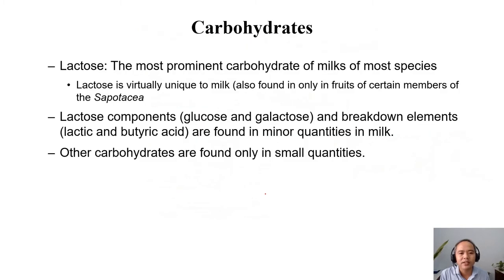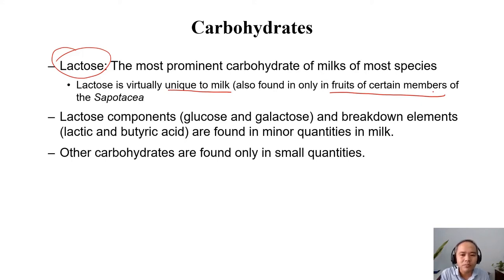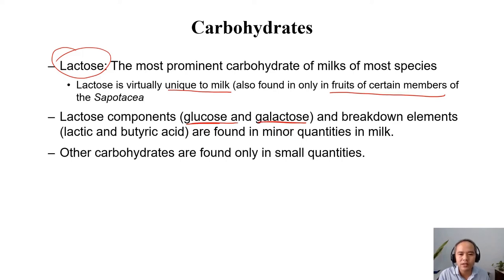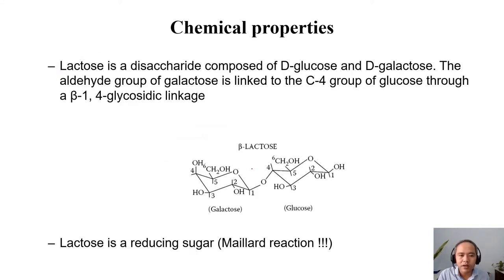We go first to carbohydrates. The main carbohydrate of milk is lactose. This is a sugar which is unique to milk — it occurs virtually in milk only, and in the fruit of certain plants as well, but that is very rare. That is why we call it milk sugar. The sugar in human milk, in cow milk, in mammals' milk — it is lactose. Lactose is a disaccharide which consists of glucose and galactose. These two monomers also occur in small amounts, as do some breakdown products like lactate and butyric acids.